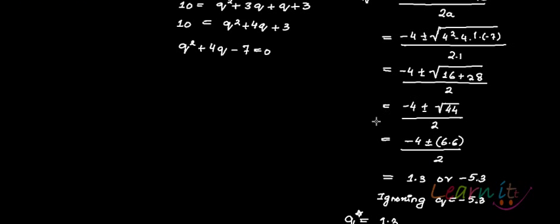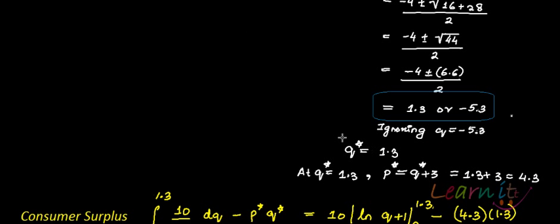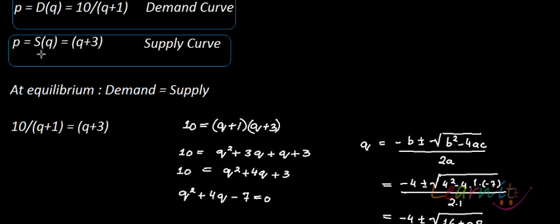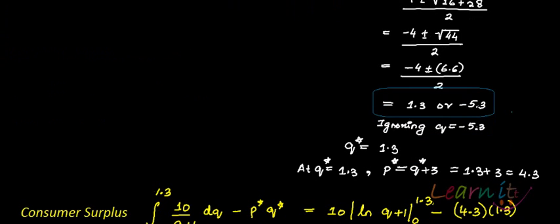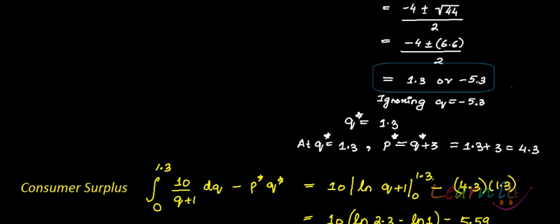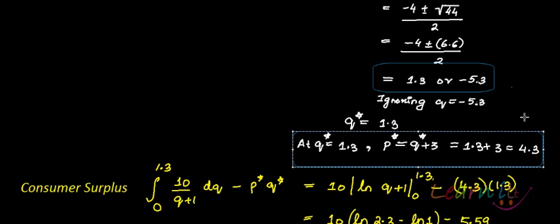After substitution, Q equals either 1.3 or −5.3. We ignore Q = −5.3 since there is no such thing as negative quantity. So Q* = 1.3. Plugging back into the supply equation: P = 1.3 + 3 = 4.3, so P* = 4.3.